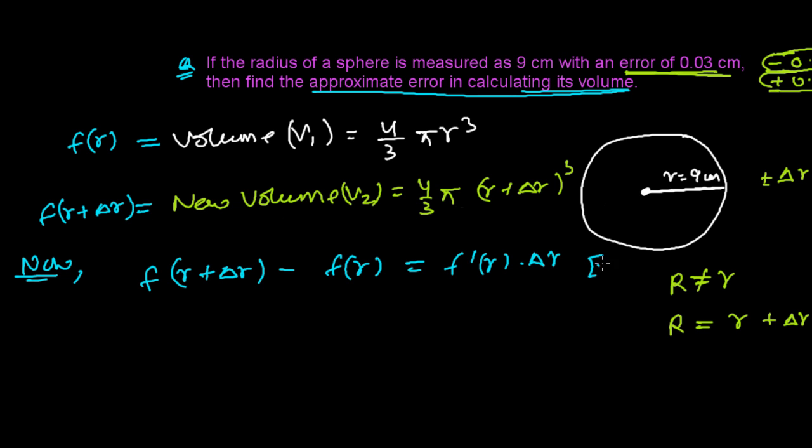You need to keep in mind that Δr equals dr here. Now, f(r + Δr) is actually representing the new volume V₂, and f(r) is actually V₁. Finally, this V₂ - V₁ is giving us ΔV.